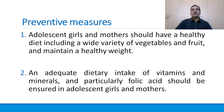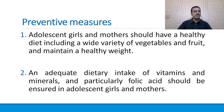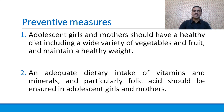So what are the preventive measures by which we can reduce the risk of congenital anomalies? Adolescent girls and mothers should have a healthy diet including a wide variety of vegetables and fruits and maintain a healthy weight. An adequate dietary intake of vitamins and minerals, and particularly folic acid, should be ensured in adolescent girls and mothers.